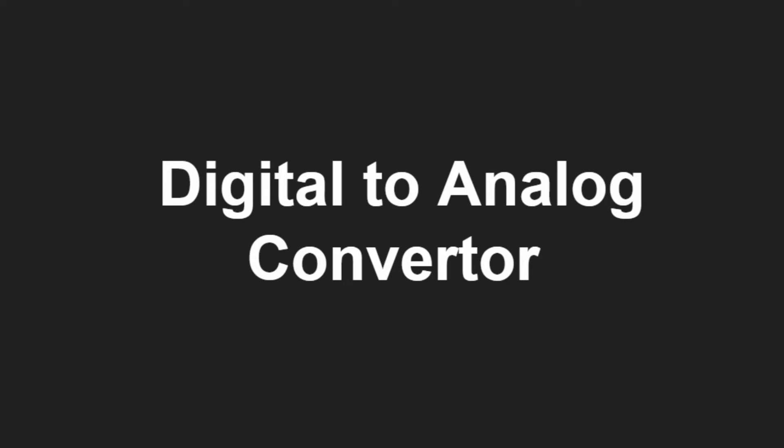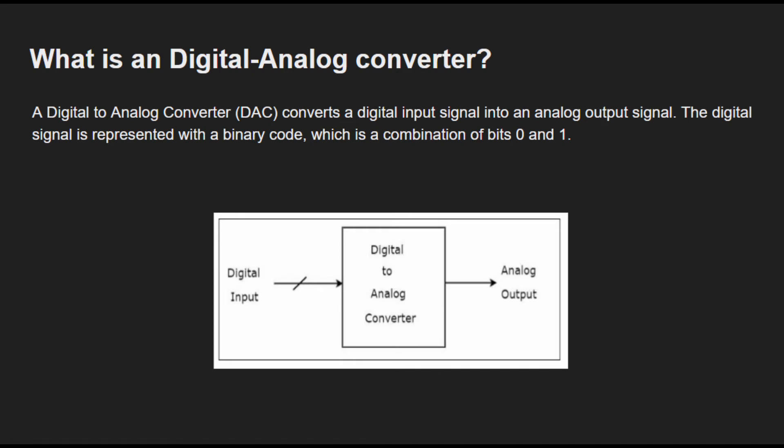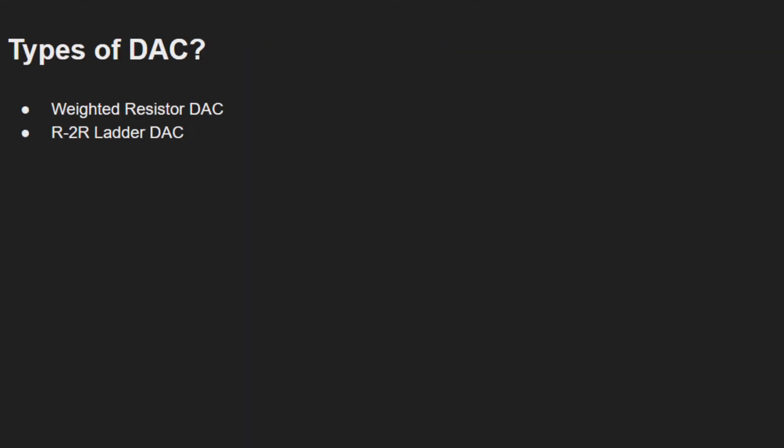Hey guys, the eCraft Gigs are back with a new topic. Today we are going to see what digital-to-analog converters are. A digital-to-analog converter converts a digital input signal into an analog output signal. The digital signal is represented with a binary code, which is a combination of bits 0 and 1.